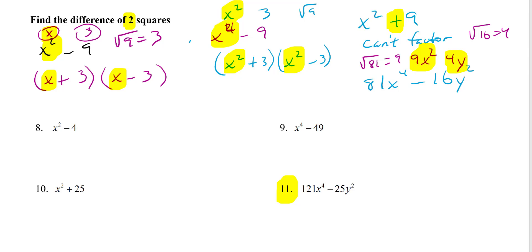So your answer for this one is gonna be 9x squared plus 4y and 9x squared minus 4y. Okay, that's it, math fans.